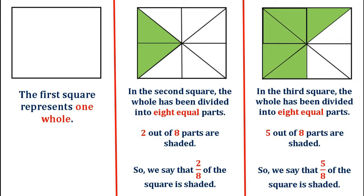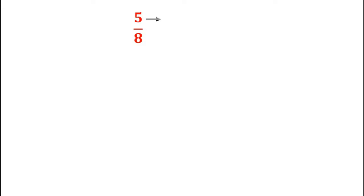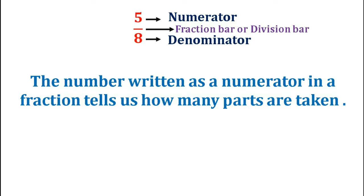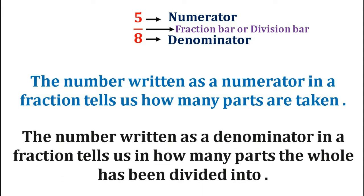So we can say that five by eight of the square is shaded. Let us now look at the fraction five by eight, where the number written above the line, that is five, is known as the numerator. The number written below the line, that is eight, is known as the denominator, and the line is called a fraction bar or division bar. The number written as a numerator in a fraction tells us how many parts are taken. The number written as a denominator in a fraction tells us in how many parts the whole has been divided into.